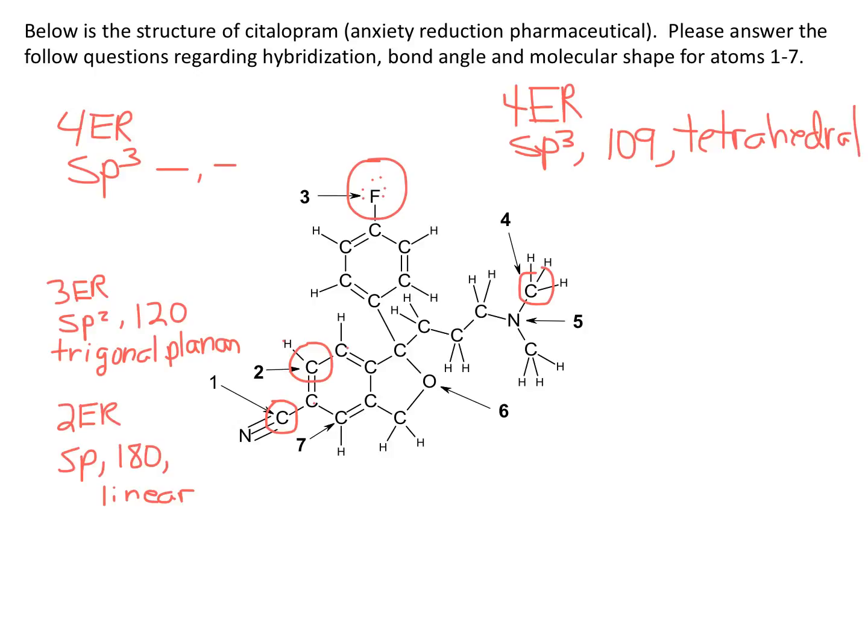If I move to center five, the nitrogen, I see it only has three bonds, so I need to add a lone pair. Now I've got eight electrons around that nitrogen. I still have four electron regions because I have three bonds and a lone pair. That makes the hybridization sp3. The bond angle is going to be 109, but because of that lone pair it's going to be a little less than 109. The molecular shape, because of the lone pair, is going to be trigonal pyramidal.